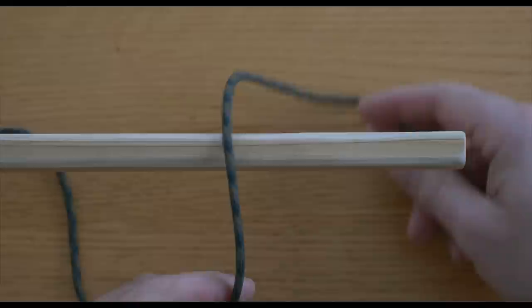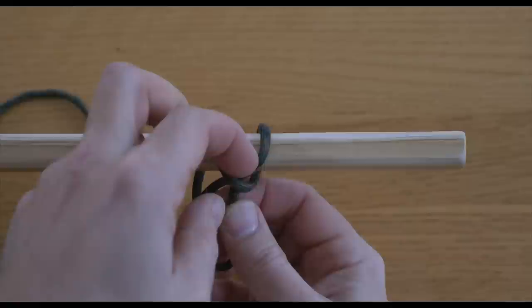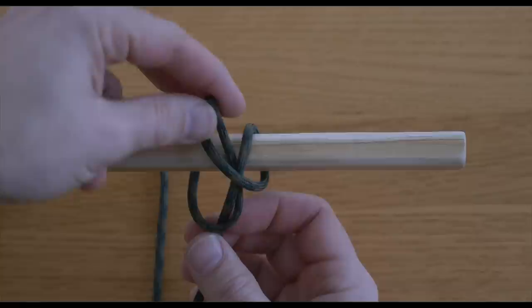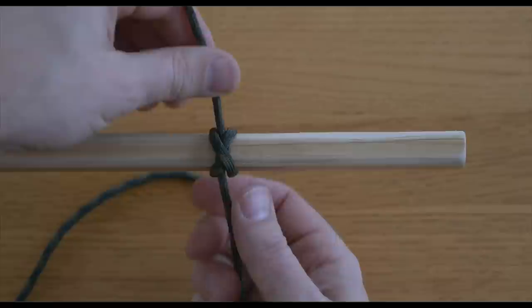Tying the constrictor knot is very similar to the clove hitch. Begin by wrapping your working end around your anchor point. Then cross over your line and around your anchor again. Now feed your working end back under the two wraps, making sure you first cross over your standing line. From there, simply pull both ends to tighten up the knot.